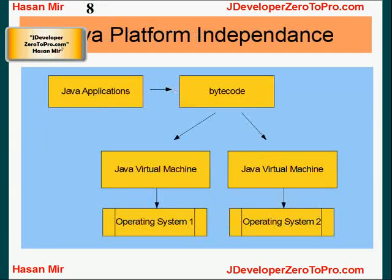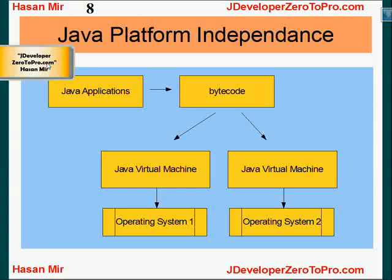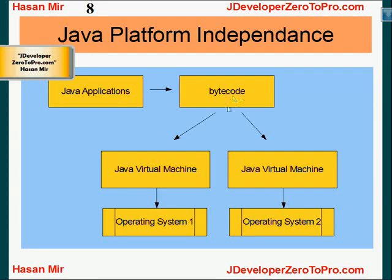Why did Sun implement Java processing this way? There's a reason for that. Sun wanted to achieve platform independence. For example, we have operating system 1 — let's assume this is Windows — and operating system 2 — let's assume this is Linux. You install a JVM for Windows on Windows, and a JVM for Linux on Linux, so JVMs are platform dependent. When you write a Java program, it's converted into the same bytecode, and that same bytecode will be processed exactly the same way by both JVMs. The JVMs take the burden of the operating system differences upon themselves, but the bytecode is processed the same way. So you write your Java program in a similar fashion regardless of operating system, because the bytecode is guaranteed to execute the same way on any operating system.